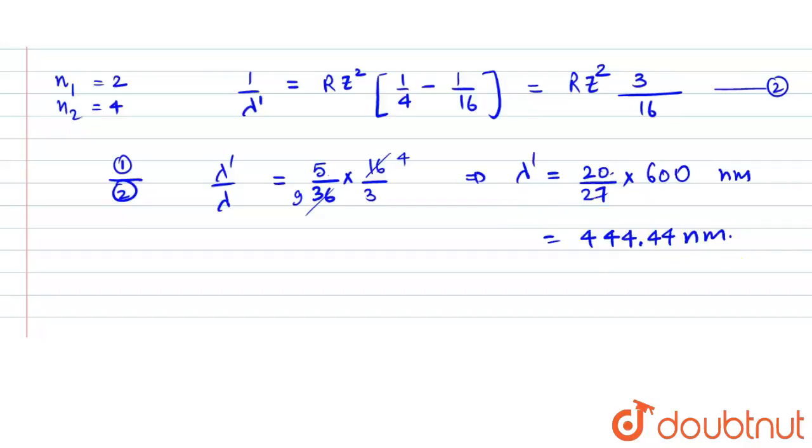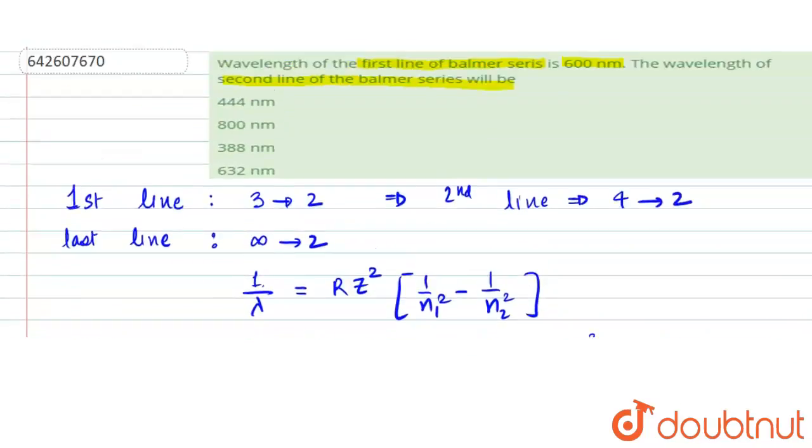This gives us 444.44 nanometer. This is the value of λ', which represents the second line of the Balmer series. This is given to us in option A. I hope this helps you with the answer. Thank you.